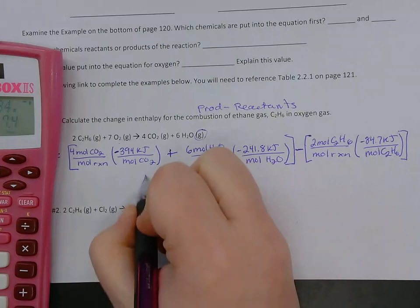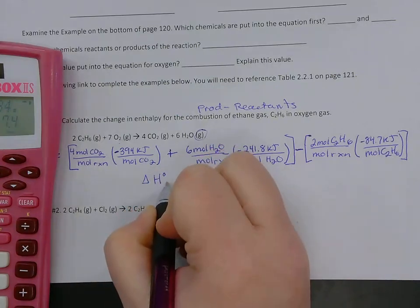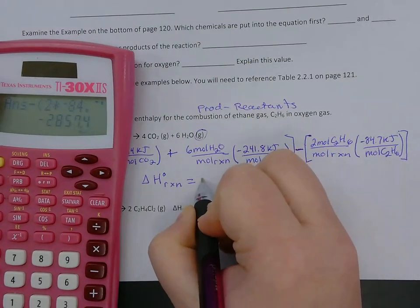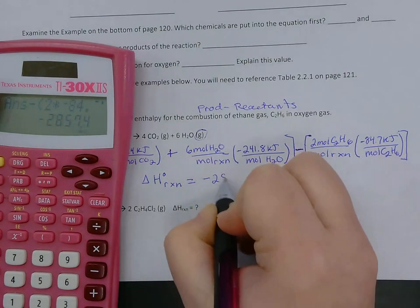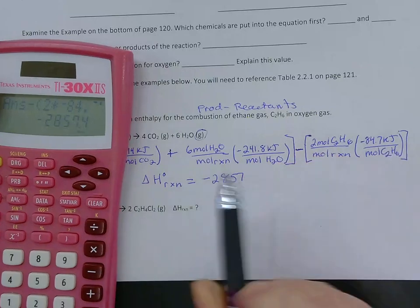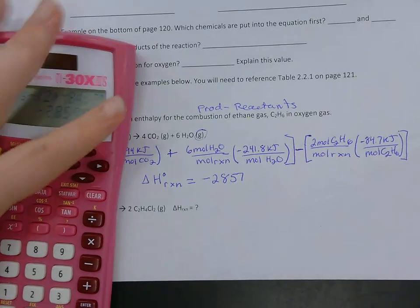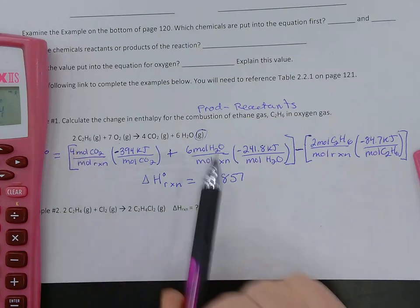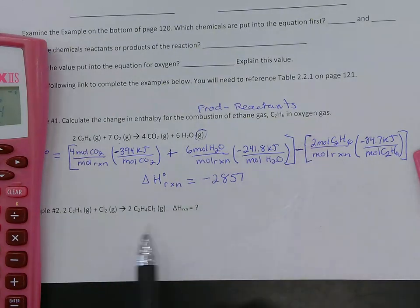And that is our answer. So our delta H value for this reaction is negative 2857. Now, in terms of your sig figs, we don't have to worry. These are exact numbers, your numbers of moles. So we don't have to worry about them. We're not going to go down to one sig fig.